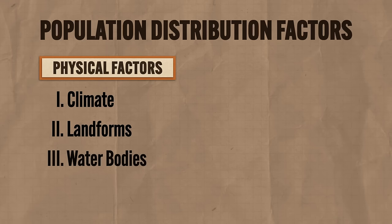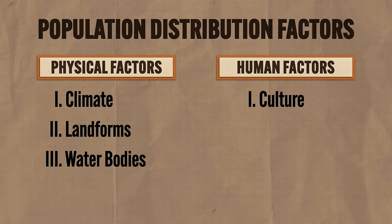Now let's consider the other major category that affects population distribution: human factors. The first human factor is culture — people may choose to live in a place because it's somehow important to their culture; they feel like they belong there. For example, both Jews and Muslims feel like they have a right to the land of Israel and Palestine because they have ancient cultural attachments to them, and those rival attachments have caused significant geopolitical problems.